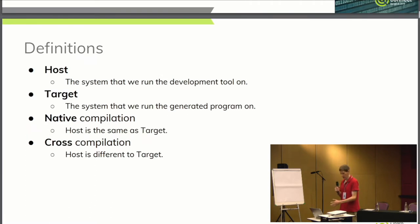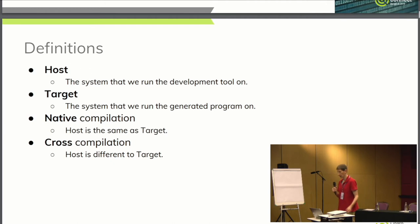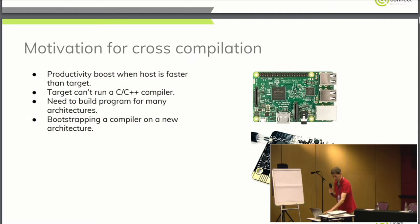Very basic definitions. When I say 'host', that's the platform you're compiling on — typically an x86 machine, though nowadays it might even be an AArch64 machine. 'Target' is what you're compiling for. 'Native' means host and target are the same; 'cross' means they are different. The motivation is obviously performance for large servers compiling down to a smaller target like ARM, and on a microcontroller you can't yet fit a C++ compiler.